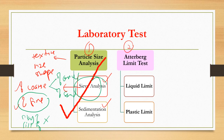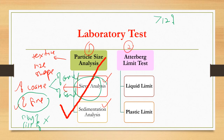If from the sieve analysis result you know the percentage of fine-grained soil — for example, it has more than 12% of fine-grained soil, which is considered significant enough to influence the behavior of soil — then you want to know whether that 12% belongs to clay or silt. So what you need to do is carry out the Atterberg limit test.